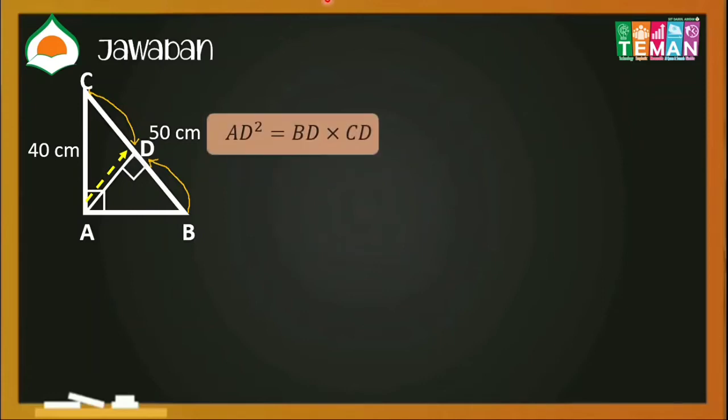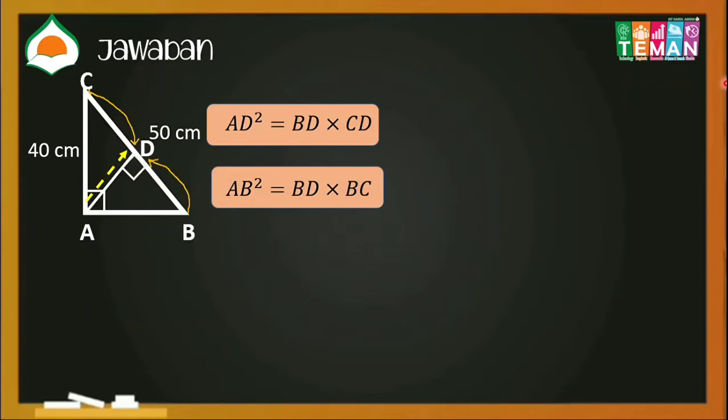Masih ingat rumusnya? AD kuadrat sama dengan BD dikali CD. Tapi kalau kita lihat nih, teman-teman, BD dan CD-nya belum ada nilainya ya. Maka kita tidak bisa langsung menghitung. Yang pertama, kita harus mencari dulu nilai BD. Masih ingat rumusnya? Untuk mencari BD, kita bisa menggunakan rumus AB kuadrat sama dengan BD dikali BC. Nah, tapi nilai AB-nya belum ada nih. Kita bisa mencari, karena segitiganya siku-siku dengan nilai sisinya 40 dan 50, maka sisi yang satunya ingat masih berapa? Ya, sisi yang satunya adalah 30 cm.